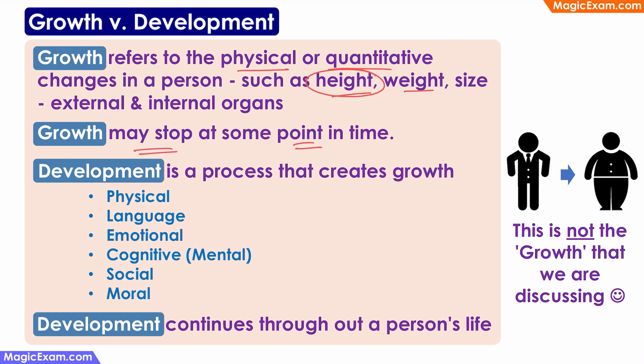Therefore, growth may stop at some point in life. Growth is quantitative because it is physical in nature, meaning that it can be quantified or measured. For example, the height of a person can be measured or the weight of a person can be measured.